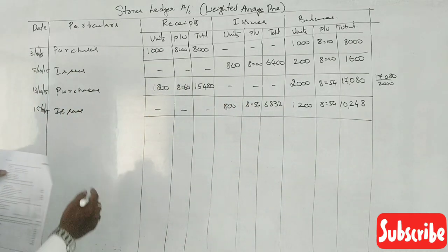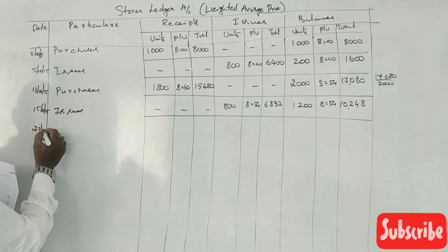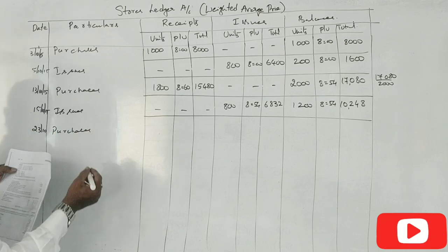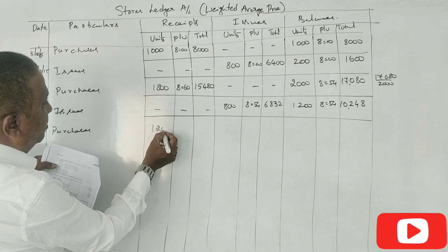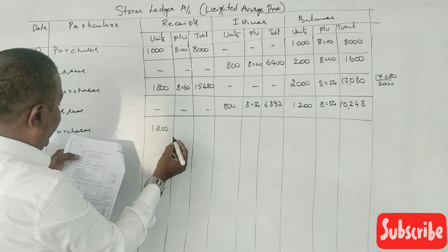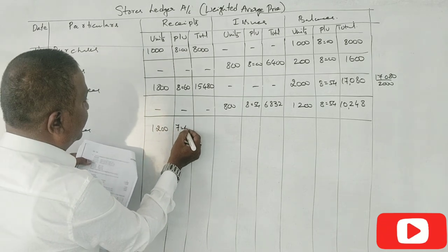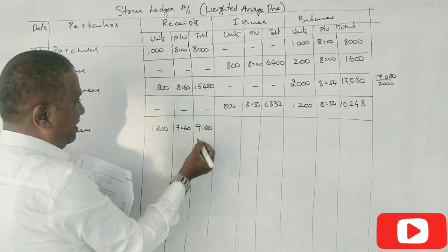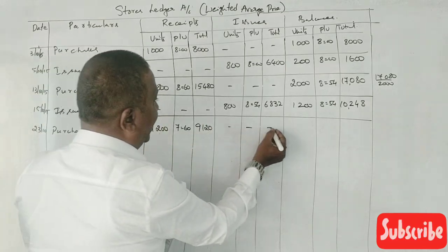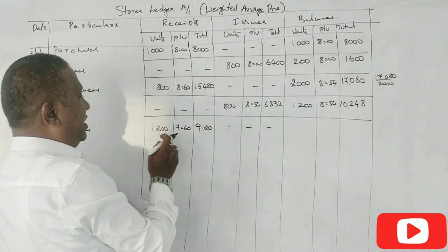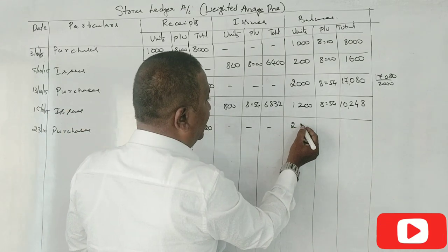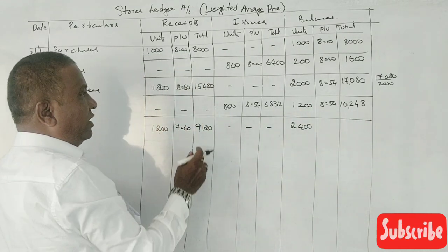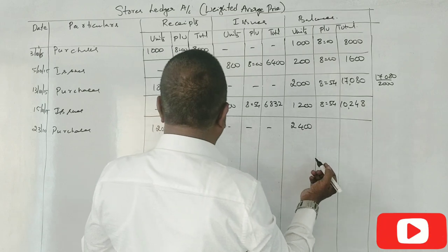23rd of October: purchased 1,200 units at ₹7.65 per unit — ₹9,120. Total units: 1,200 + 1,200 = 2,400. ₹10,248 plus ₹9,120 equals ₹19,368.